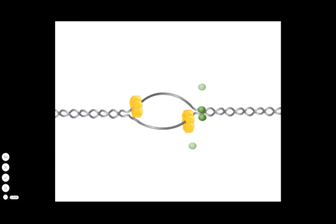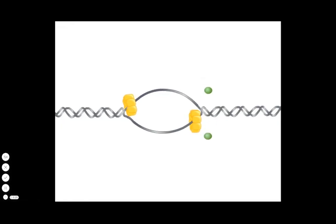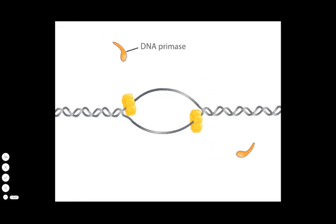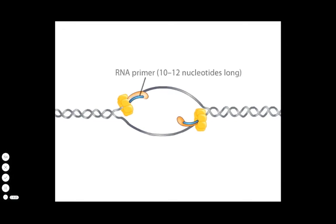Each DNA helicase recruits an enzyme called DNA primase, which synthesizes an RNA primer on the DNA template. An RNA primer has on its end a 3' hydroxyl group, which is required as a starting point for DNA polymerase to add DNA nucleotides.